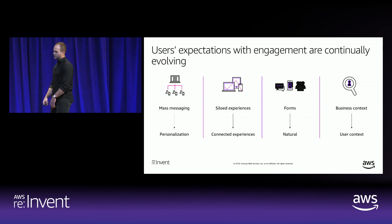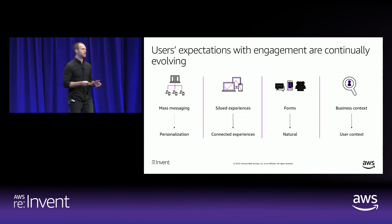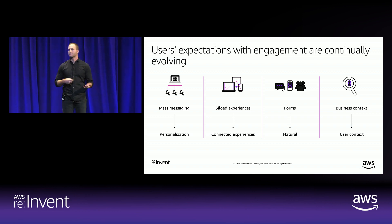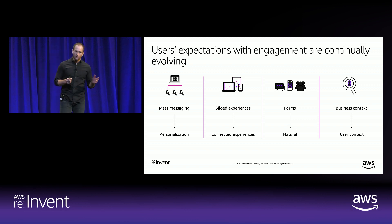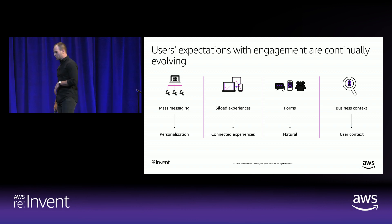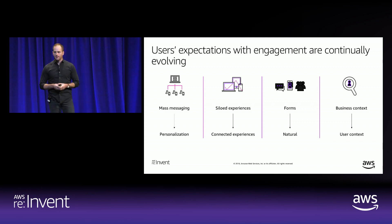We expect experiences to be connected across devices — if I interact with a brand on Facebook and then on Twitter, I expect the brand to have an idea of my interaction across channels so I'm not having disjointed conversations. We also want engagement to be more natural and bi-directional, not just a ping on your phone. Notifications should offer something valuable. And the last point is understanding user context — the broader profile of the customer, who they are, what they like, what they're doing.